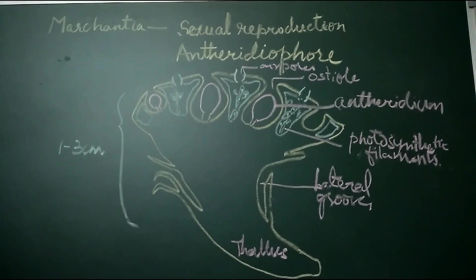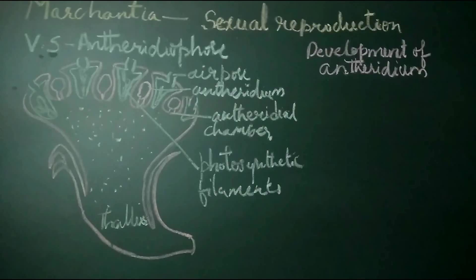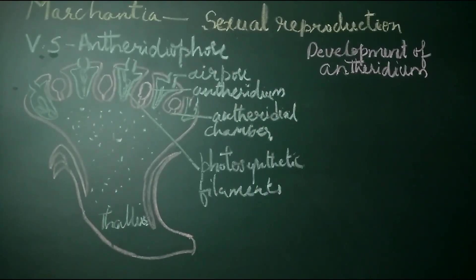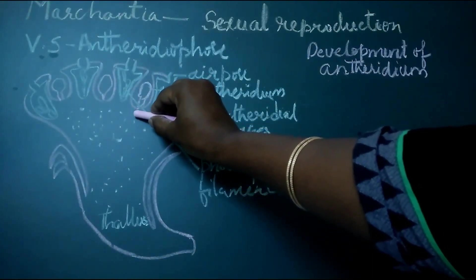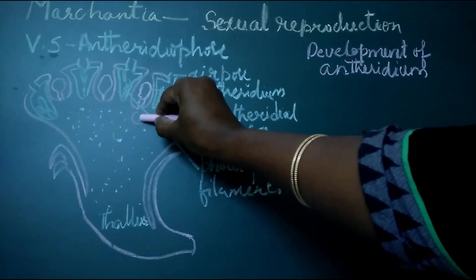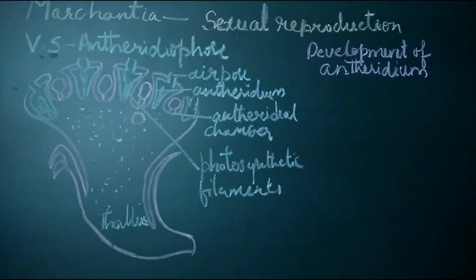Let us now see how the antheridium develops on the antheridiophore. The antheridium develops from a single superficial cell slightly below the anthridial chamber. One of the cells is identified as an anthridial initial, which is different from the other cells in the sense that it has dense cytoplasm and is larger than the other cells.